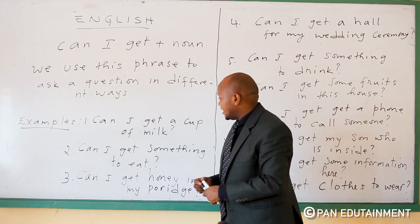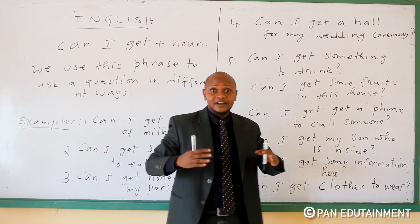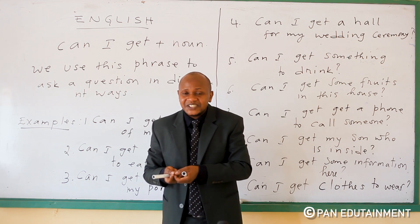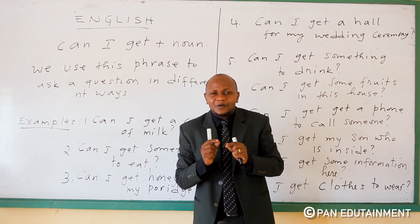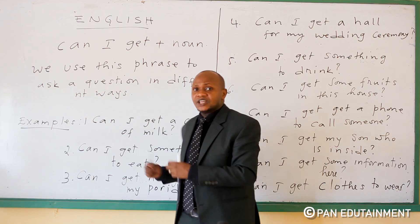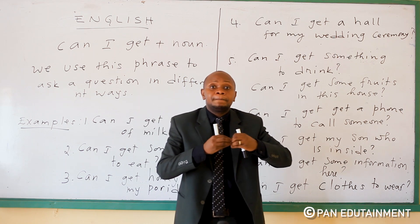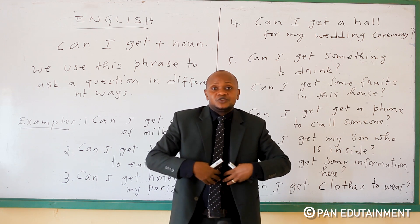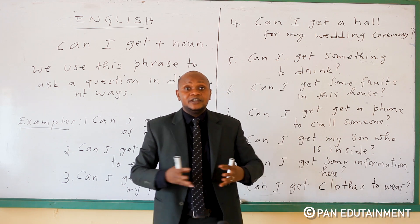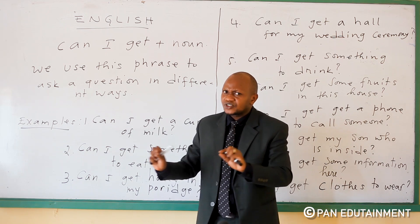Number two: you can say, 'Can I get something to eat?' For example, you are very hungry, you are starving. When someone is starving, it's somehow very serious. You can say, 'Can I get something to eat here?' Because you don't have anything inside — your stomach is very empty. Can I get something to eat here?